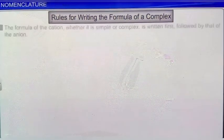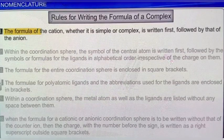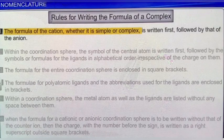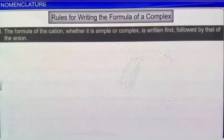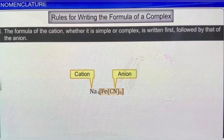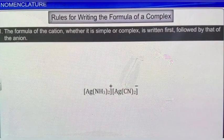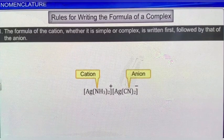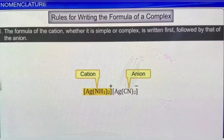The first rule is that the formula of the cation, whether it is simple or complex, is written first, followed by that of the anion. For example, in the complex shown here, the cation sodium is written first, followed by the anionic coordination entity. Similarly, in the complex containing a complex cation and a complex anion, the complex cation [Ag(NH₃)₂] is written first, followed by the complex anion [Ag(CN)₂].